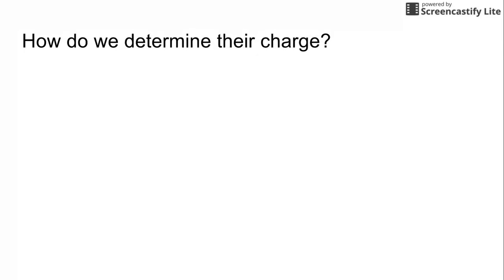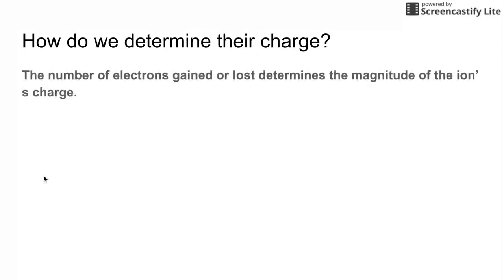So how do we actually determine their charge? The number of electrons gained or lost determines the actual magnitude of the ion's charge. So the periodic table can actually help you to predict what ions an element will make. Some tend to be a little bit weaker and can lose electrons much more easier. Some tend to have a much stronger pull, and they can gain electrons more easily.